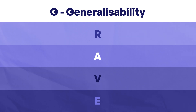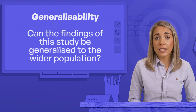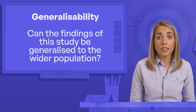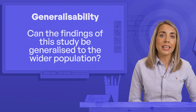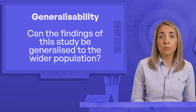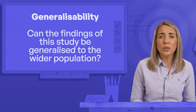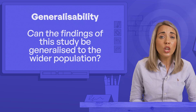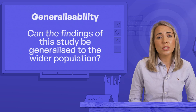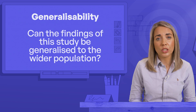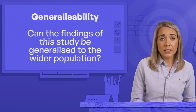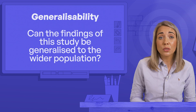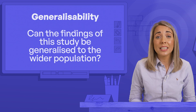G is for generalizability. Can the findings in this study be generalised to the wider population? For example, if your study into the effects of brain damage on amnesia only has one participant, you won't be able to say that all people with amnesia behave in the same way. One participant may have unique characteristics particular to them.